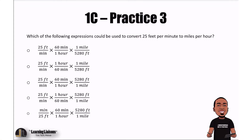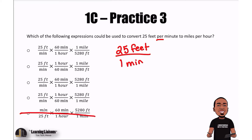If we have 25 feet per minute, that means we have 25 feet over one minute. So automatically the last choice wouldn't work, because it has minutes on top and feet on bottom — that wouldn't really work.